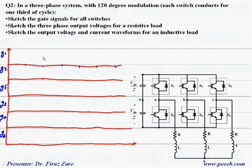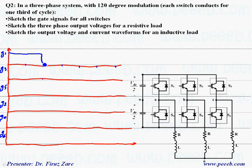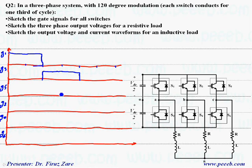Because each switch conducts for 120 degrees — meaning one-third of the cycle — we have six sectors for one cycle, so each switch conducts for two sectors. Starting with S1, the gate signal G1 covers two sectors. Because of the 120-degree phase shift between phases, in leg B the gate signal starts 120 degrees later. Switch S5 conducts for 120 degrees — two sectors — and similarly, because of the 120-degree phase shift between phase B and phase C, we can draw the gate signal for S5.